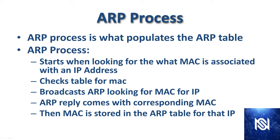The ARP process is what populates the ARP table. It starts when a device is looking for the destination MAC address in order to reach a specific IP address. The device first checks the ARP table. If the entry is already there, it forwards appropriately. If it's not in the table, it broadcasts an ARP request looking for the MAC address for that specific IP. The device with the matching IP sends a reply containing the MAC address, which then populates the table.